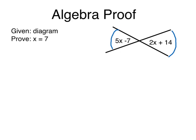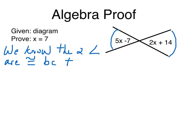So I'm going to start my proof by the second step, which is writing down what we know. We know the two angles, we can abbreviate, are congruent because they are vertical.